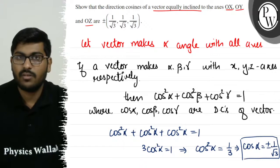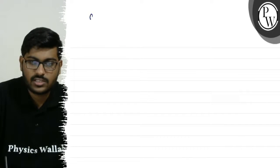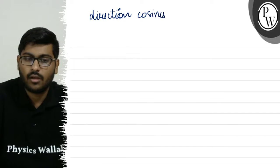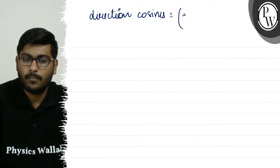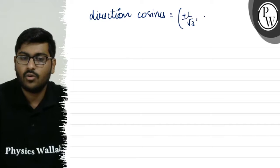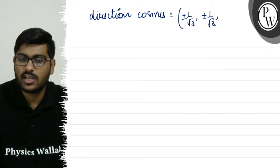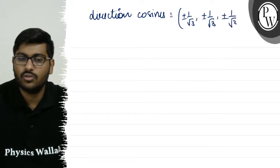So cos α will be ±1/√3. What is the direction cosine? Direction cosines will be ±1/√3 for cos α. Again, y axis is also cos α and z axis is also cos α.